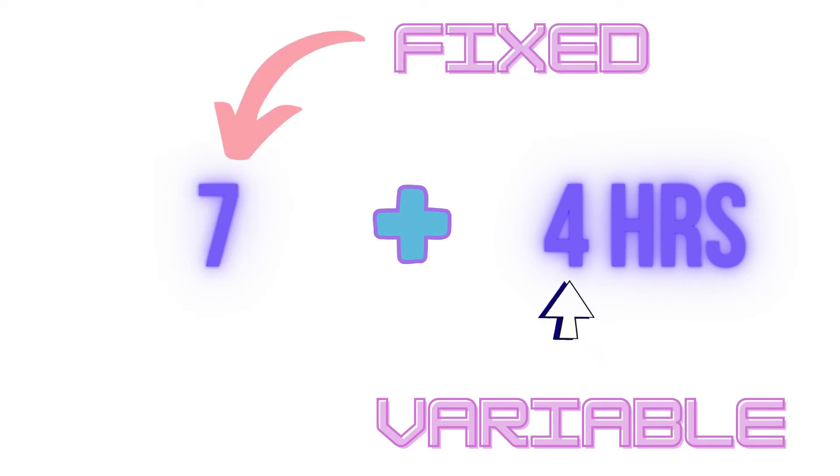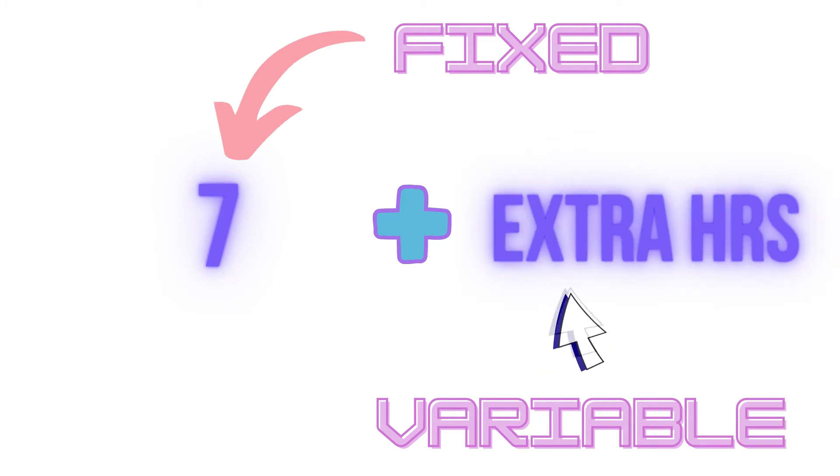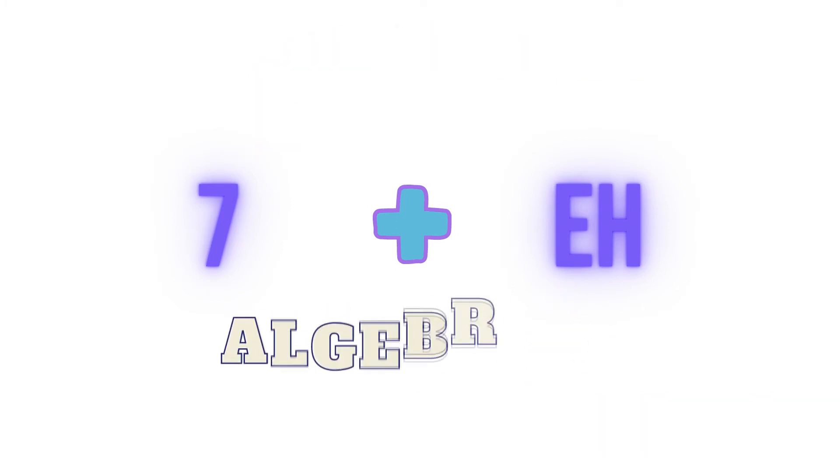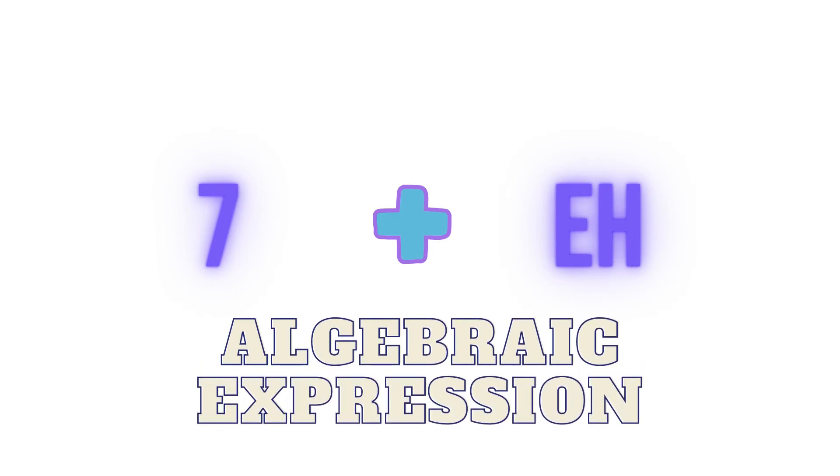And the total number of working hours for a day can be written as seven plus extra hours or seven plus EH if we are using initials for our convenience. So this expression seven plus EH is an algebraic expression.